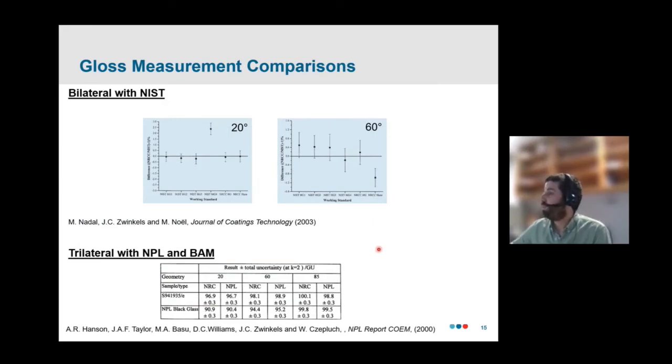Now, over the years, there have been a number of efforts in order to validate the performance of this instrument. One that I'll talk about a bit was done in 2003. This was a bilateral intercomparison done with NIST. And in this comparison, the two labs exchanged six samples and they were measured in both labs and the results compared. These are some of the results from that intercomparison. What's being shown in these plots is the relative difference in the scales at 20 and 60 degrees for the six different standards used in the study. And you can see that, for the most part, the two instruments or the two labs are in agreement within the stated uncertainties.